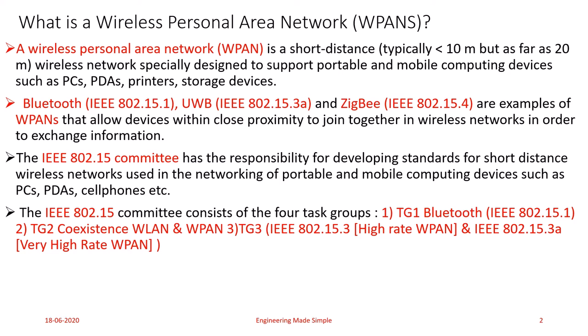Task Group 3 works on the physical and MAC layers for very high-rate WPANs that operate at data rates more than 20 Mbps, providing low-power, low-cost solutions for portable consumer digital imaging and multimedia applications, aiming at compatibility with Bluetooth specifications. Task Group 4 investigates an ultra-low complexity, ultra-low power, ultra-low cost physical and MAC layer for data rates up to 200 kbps, with potential applications in sensors, interactive toys, smart badges, remote controls, and home automation.